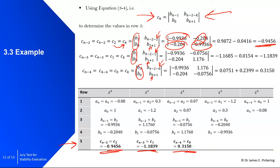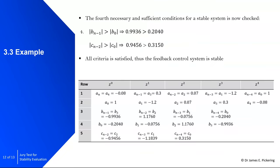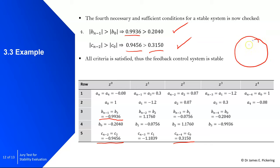Now I'll go through the fourth necessary and sufficient condition. b_{n−1} = b_3, and the absolute value of that is 0.9936, which must be greater than |b_0| = 0.2040 — it is, so that condition is satisfied. Then c_{n−2} = c_2, and the absolute value of that is 0.946, which must be greater than c_0 — it is, so that condition is satisfied. All four conditions have been satisfied for this closed loop control system, meaning the poles are within the unit circle and we have a stable system.